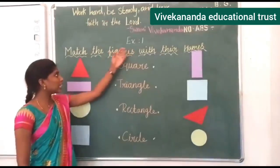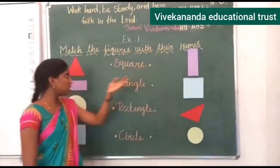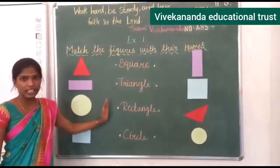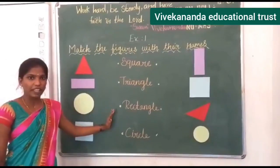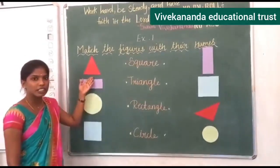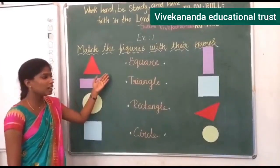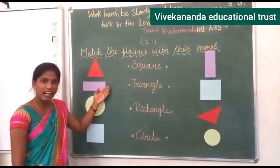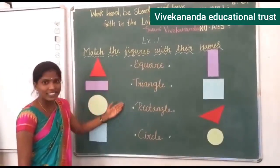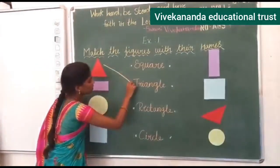Next we will do exercise — match the figures with their names. Now we are going to match the shapes to their names. What shape is this? Triangle. What is the spelling for triangle? T-R-I-A-N-G-L-E. Where is it? Here — so match this to this.